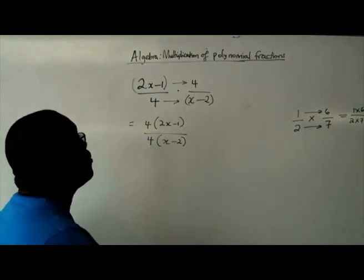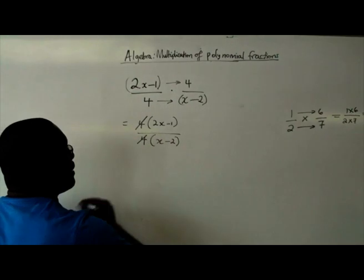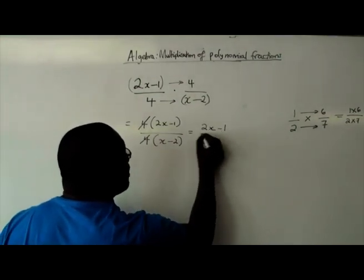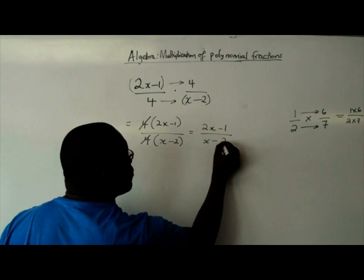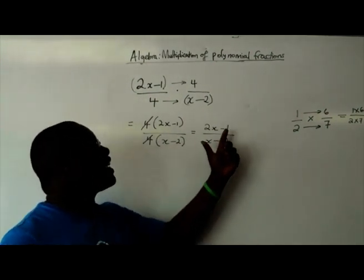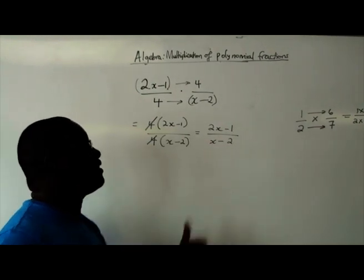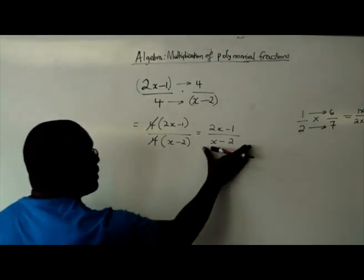Right. So for illustrative purposes, I'll cancel it here. So you have 2x minus 1 over x minus 2. So that would be your reduced form because we can't reduce it any further than this. So this would be your result.